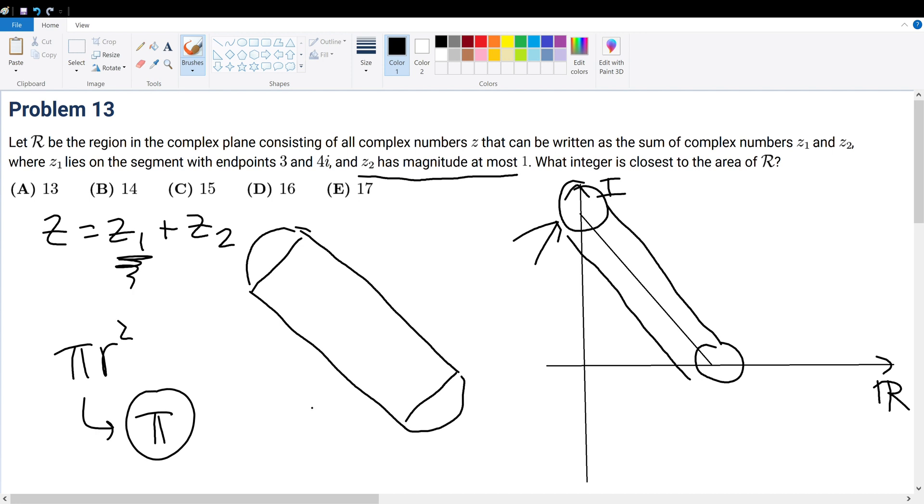Now what about the area of the rectangle? Well, the rectangle—this diameter right here of the circle is equal to 2. Why is that? Because the radius is 1, and therefore the diameter would be 2 times that, which is just 2. So that's 2.